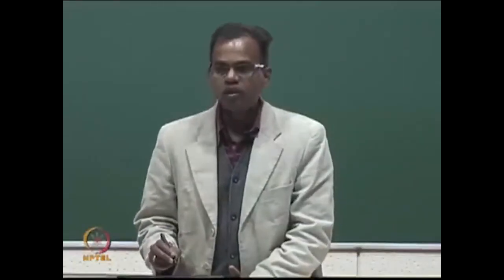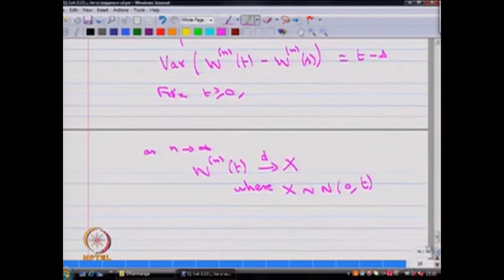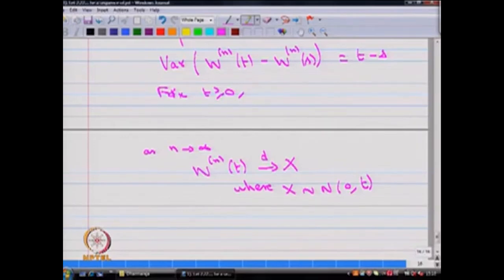This result for W^n(t) is very useful in the context of Brownian motion, and this same problem will be discussed in detail when we are discussing the model of Brownian motion.